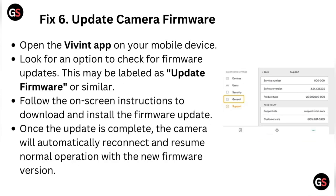Fix six: update the camera firmware. Open the Vivint app on your mobile device and look for an option to check for firmware updates — this may be labeled as 'Update Firmware' or similar. Follow the on-screen instructions to download and install the firmware update. Once complete, the camera will automatically reconnect and resume normal operation.